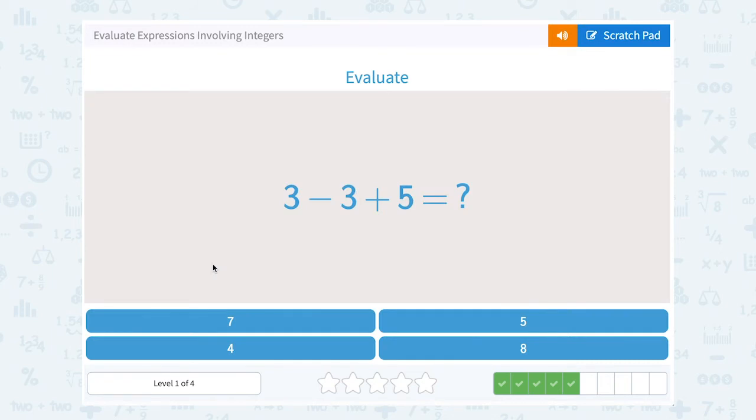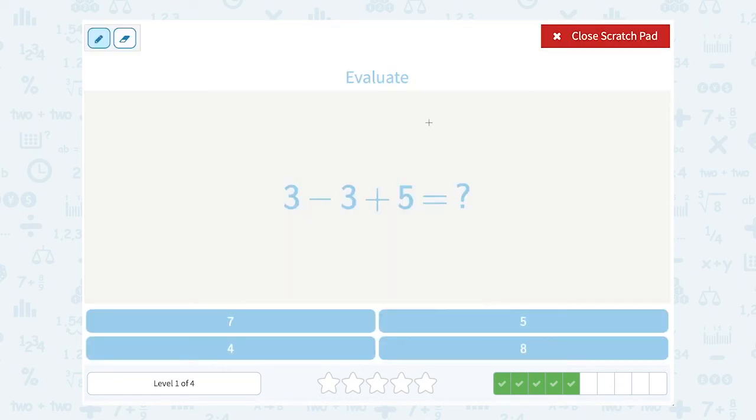3 minus 3 plus 5. Well again, addition and subtraction are the same level, so we can just go from left to right. 3 minus 3 is 0, and then I still need to add 5 to that, and 0 plus 5 gives me 5.